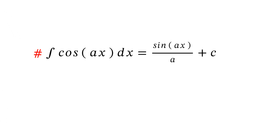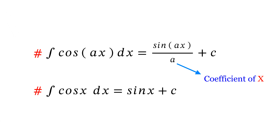Now look at the next formula: integral of cos(x) dx equals sine(x) plus C, where C means constant. Here in the place of a we just placed a equals 1. Now let's see some bigger integral formulas.